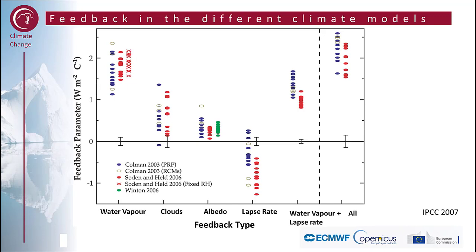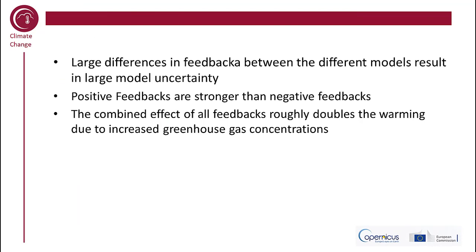What do the models say about different kinds of feedback? This graph summarizes different kinds of feedbacks across different modelling systems. Water vapour overall results in a positive feedback in all modelling systems. Clouds tend to dominate the positive feedbacks, though there's a lot of model spread. Albedo results in a small positive feedback, and lapse rates can be significant as a negative feedback. When we combine all the different feedbacks, we see that overall there is a positive feedback, which roughly doubles the warming due to increased greenhouse gas concentrations. But overall there is a large difference in feedbacks between different models, resulting in large model uncertainty.